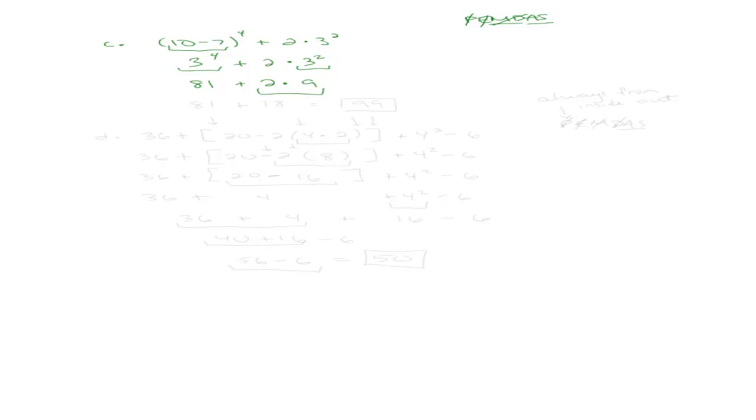I'm done with exponents. Now do I have any multiplication or division? I do — 2 times 9. So I do that: 2 times 9 is 18. Done with multiplication and division. Finally, the only thing left is addition: 81 plus 18 gives 99. That is my final answer.